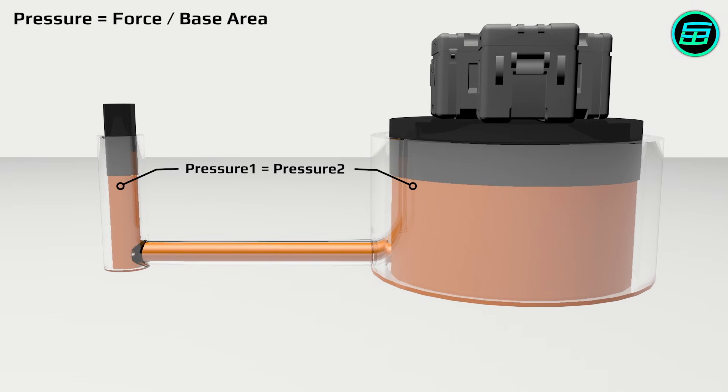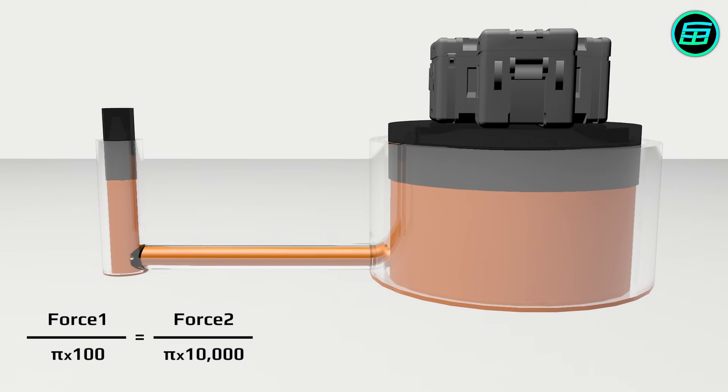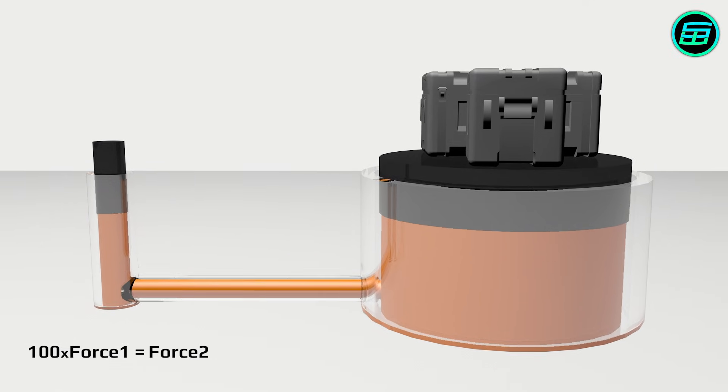Since the radius of the second piston is different than the radius of the first piston, the force exerted on the second piston is 100 times more force than that applied to the first.